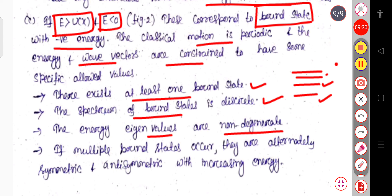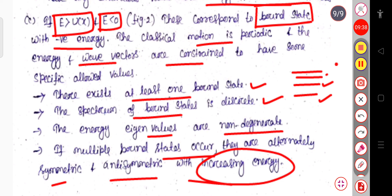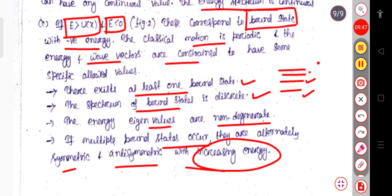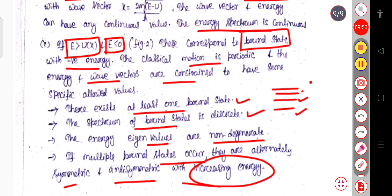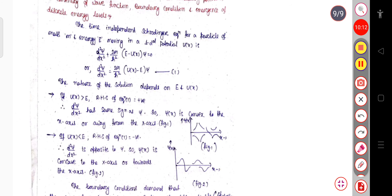If multiple bound states occur, they are alternately symmetric and antisymmetric with increasing energy. These are the conditions when the potential is greater than the energy and the energy is negative: there must be at least one bound state, the spectrum is discrete, eigenvalues are non-degenerate, and multiple bound states are alternately symmetric and antisymmetric with increasing energy. That is all for today, thank you.